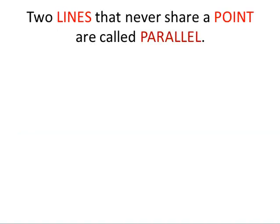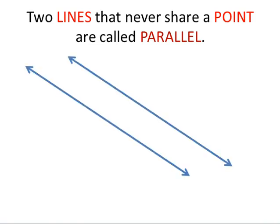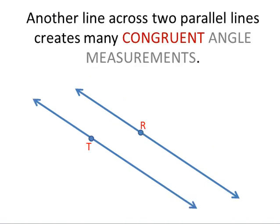Two lines that never share a point are called parallel. Another line across two parallel lines creates many congruent angle measures.